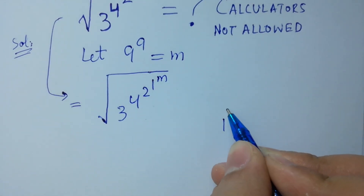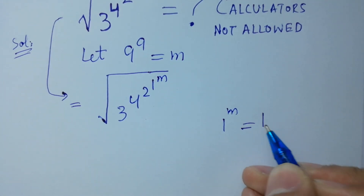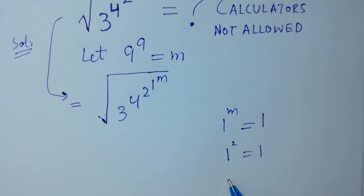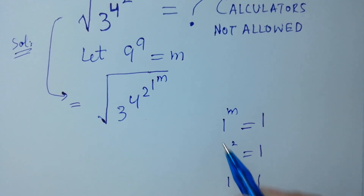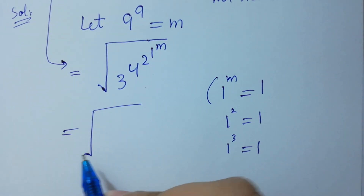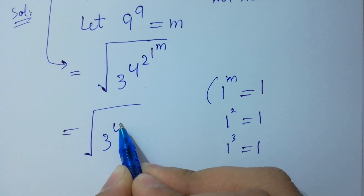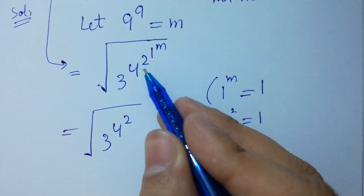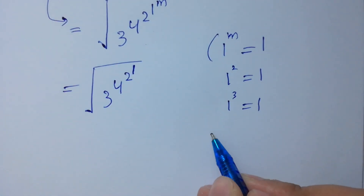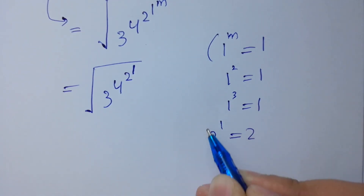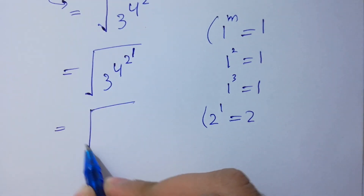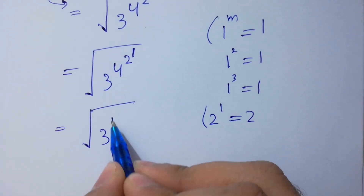Since 1 to the power m equals 1 — for example, 1 squared is 1, 1 cubed is 1 — we now have the square root of 3 to the power 4 to the power 2 to the power 1 to the power 1, which simplifies to the square root of 3 to the power 4 to the power 2.